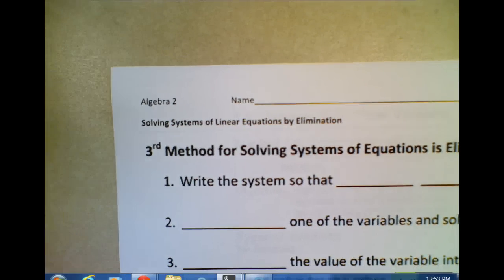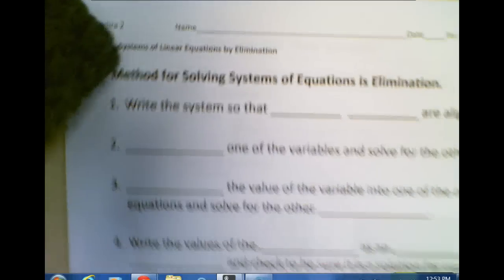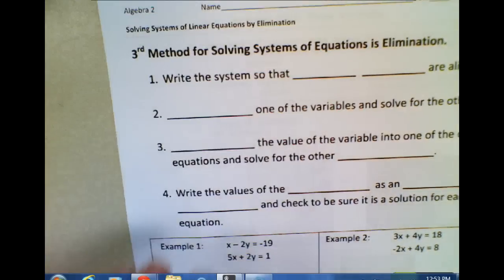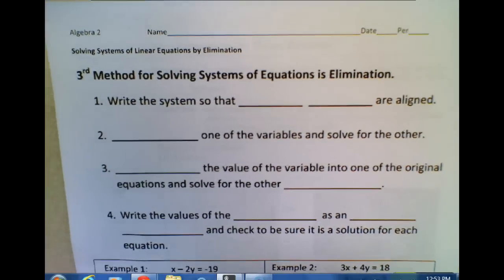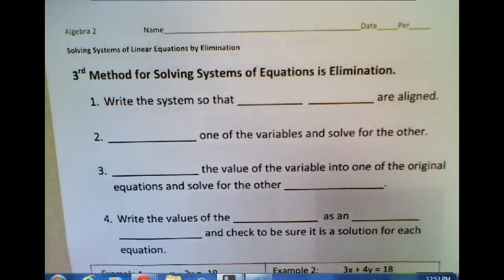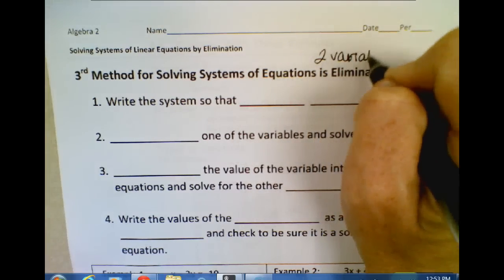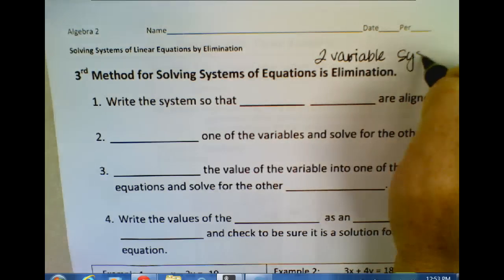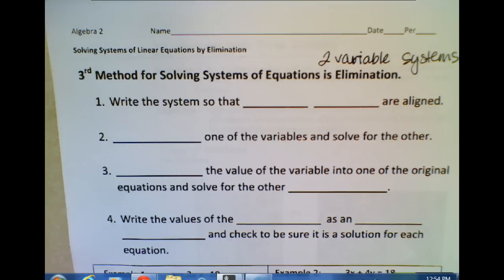Welcome back. First notes of the year and they will be fairly simple. The first section we're doing is solving systems of equations by elimination. You did this in algebra 1 — it's just been a while so we're going to do a little review. This is with two-variable systems, meaning you have an X and a Y or an A and a B. The best method for solving by elimination — I actually think elimination is much easier than substitution, but we will do some practice in class with substitution also.